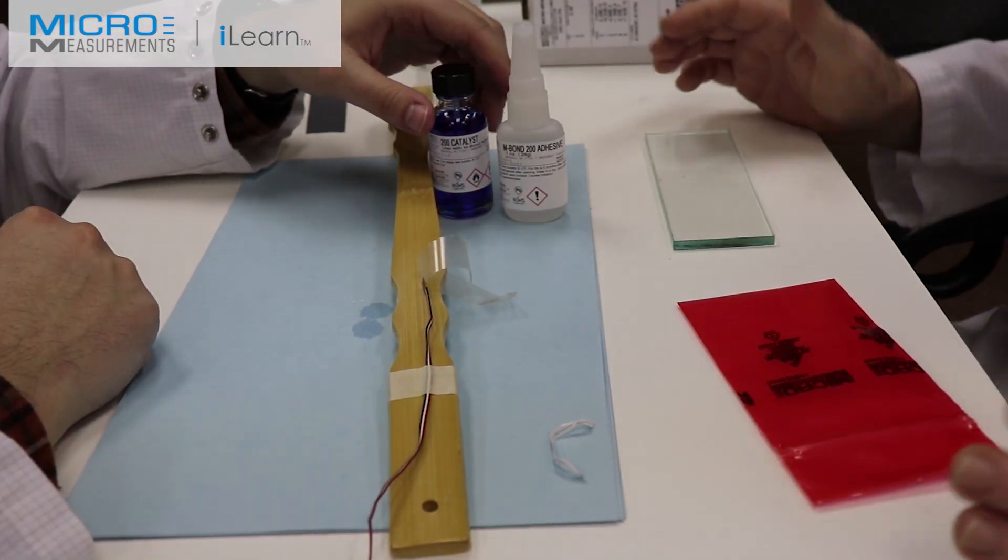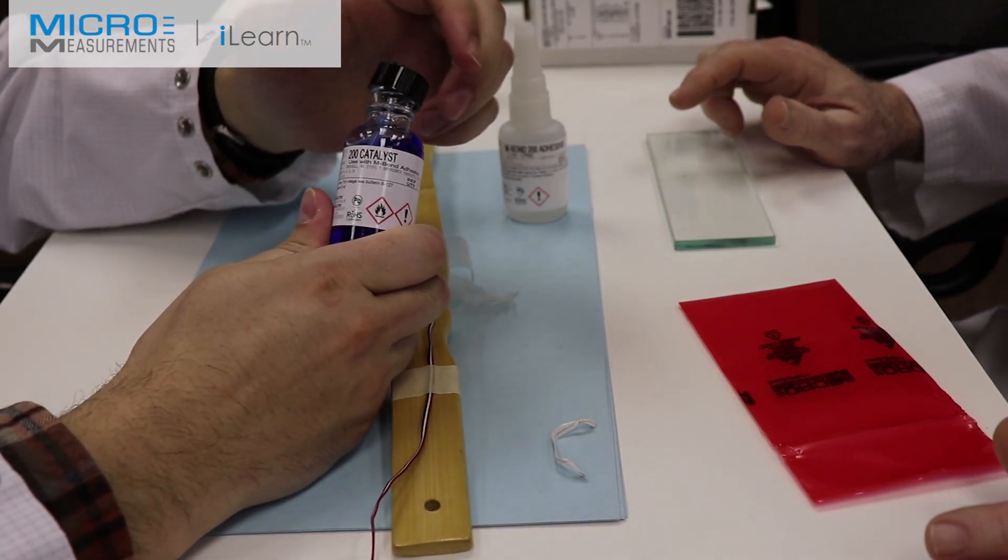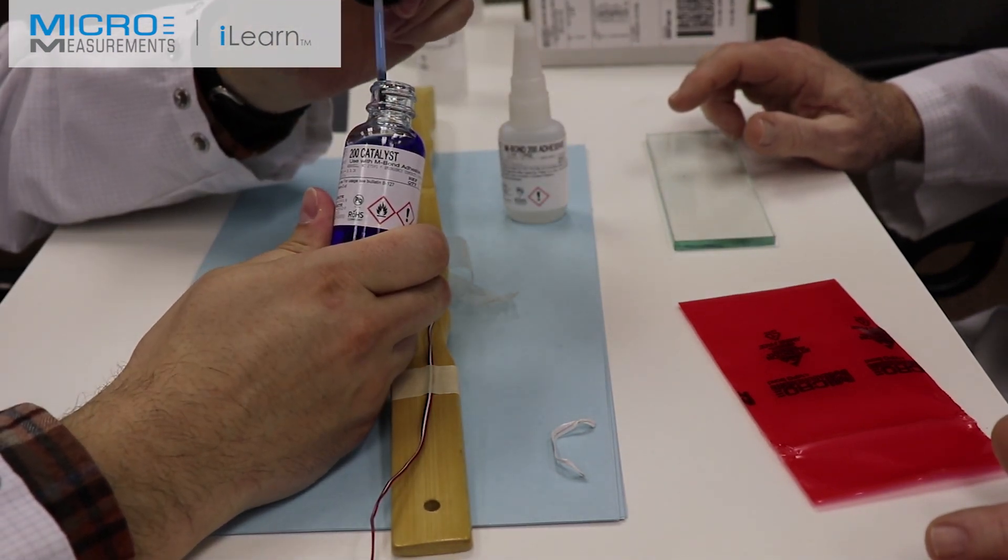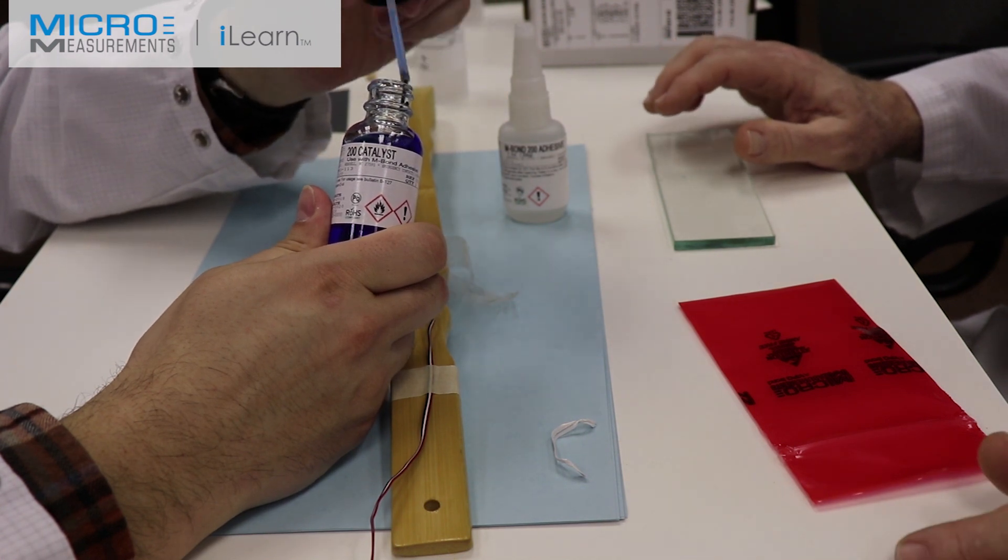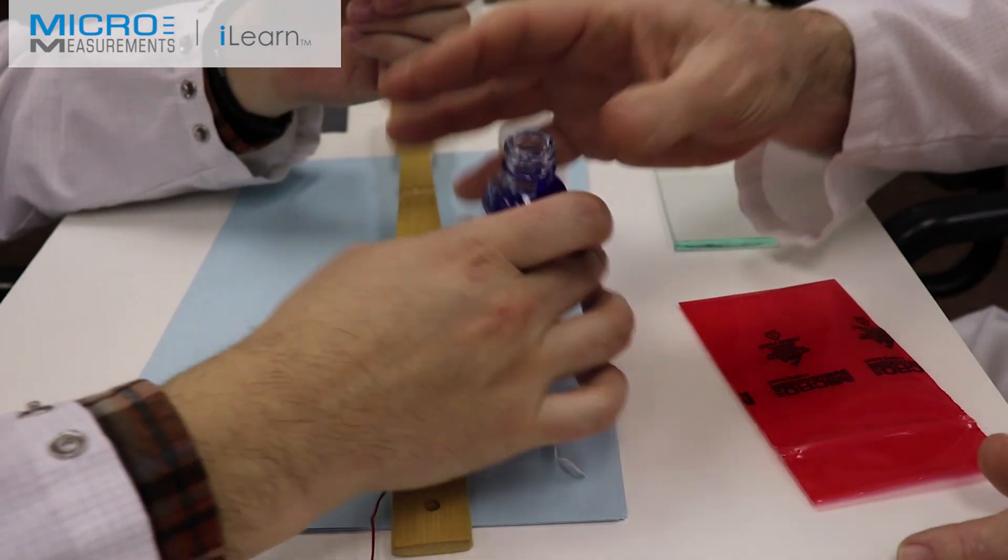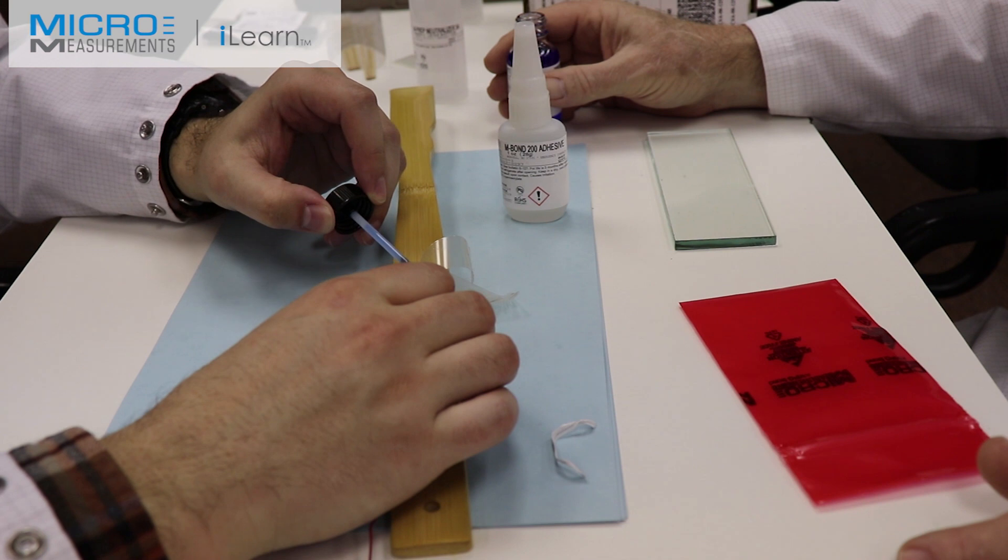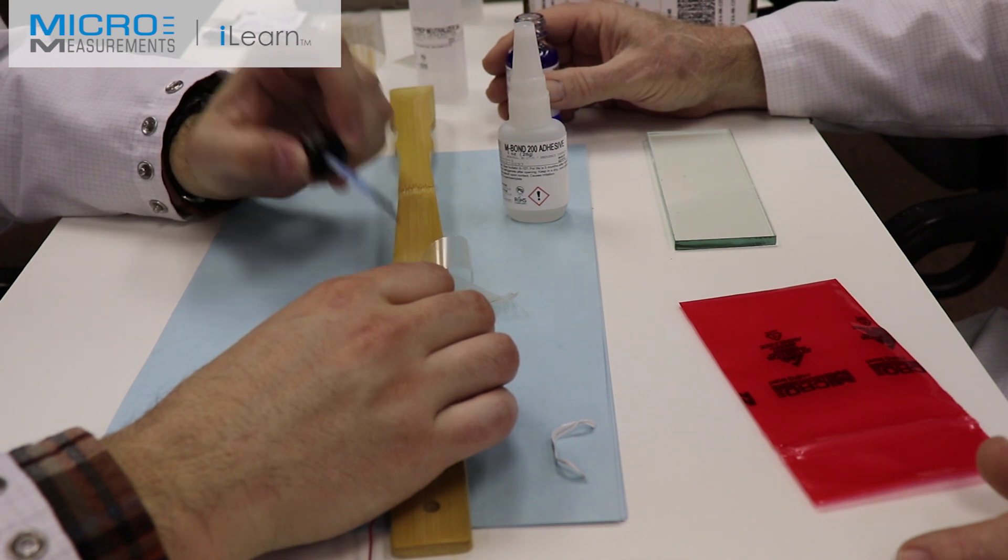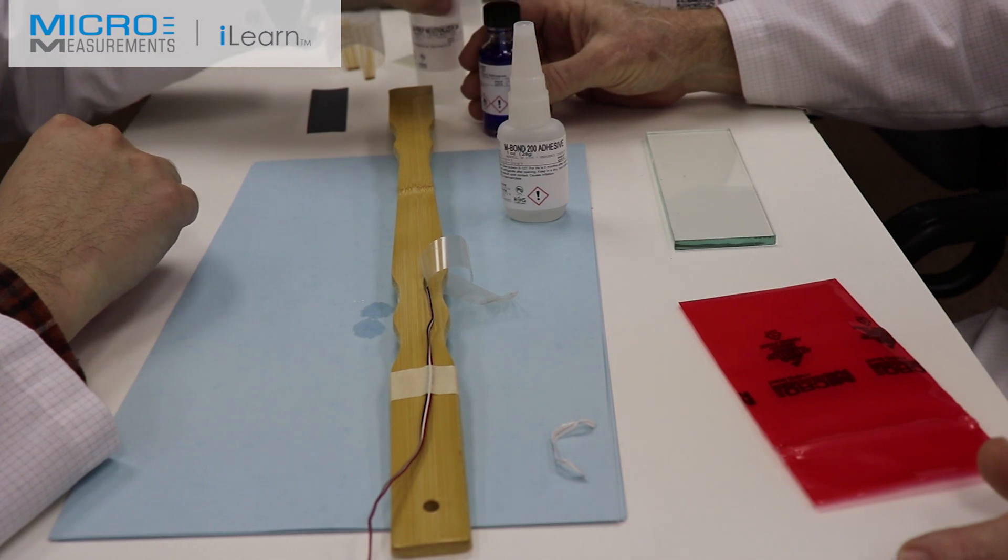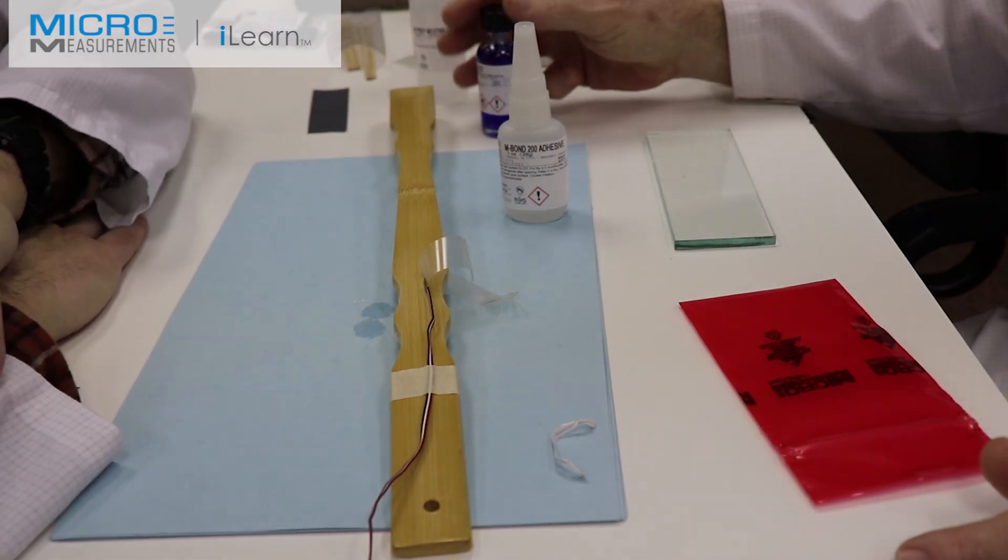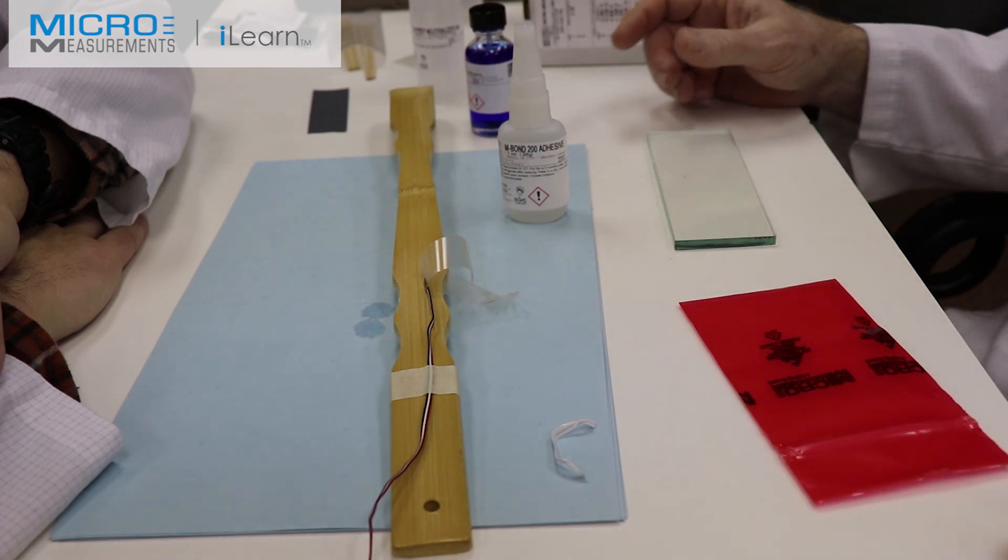Now that we've got our gauge positioned and surface preparation is complete, we're going to put on our catalyst C. On the inside of the neck of the bottle, Colin's going to hit it eight to ten times, removing almost all the liquid material. Then with a squeegee motion, he's going to squeegee across to wet the gauge. Now we wait one minute of air dry time for the catalyst C so the solvents have an opportunity to escape.